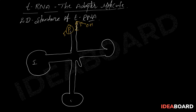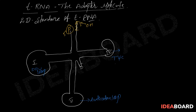This is loop 1, loop 2, loop 3, and loop 4. This is the aminoacyl synthetase binding site, which we can call the dHU loop. This is the anticodon loop, and this one is the tSiC loop. This is what we can call the extra arm or variable arm.